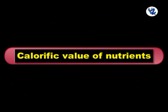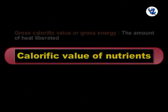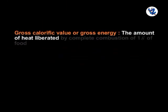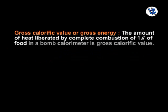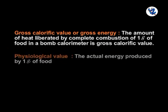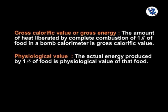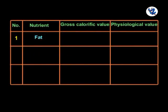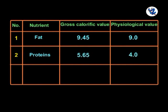Now calorific value of nutrients — the amount of heat liberated by complete combustion of 1 gram of food in a bomb calorimeter is termed as gross calorific value. The actual energy produced by 1 gram of food is the physiological value of that food. For fats it is 9.45 kcal/g, for proteins 5.65 kcal/g, and for carbohydrates 4.1 kcal/g.